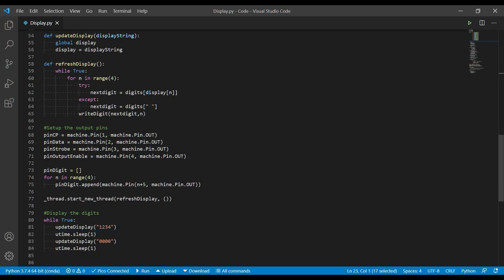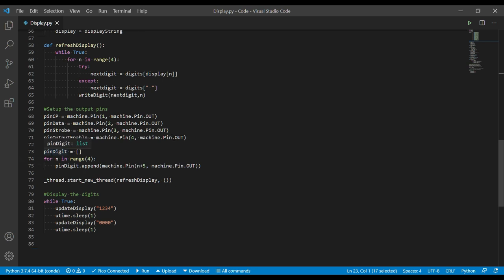So here we go. Setting up the pins. We've got clock, data, strobe, output enable. These are all straightforward pretty much. Enable the pin. And then for the digit pins, because there's four of them, we set that up in a little loop. So M plus 5. So I'm going to start at pin 5, 6, 7, 8, 9.